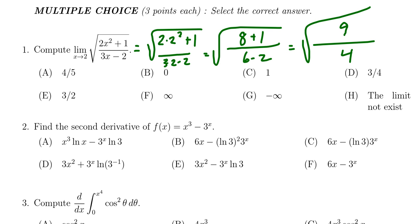So we're going to take the square root of 9 fourths, which 9 and 4 are both perfect squares. We end up with 3 halves. So we see the correct answer is E, just simply by using continuity and plugging in x equals 2.